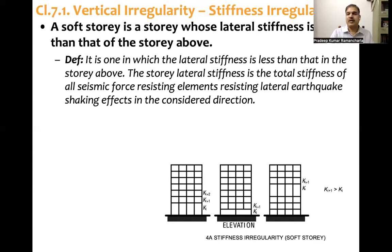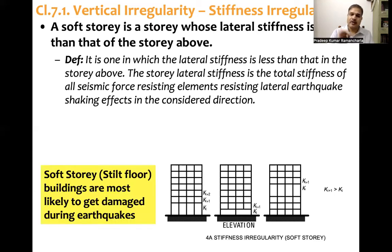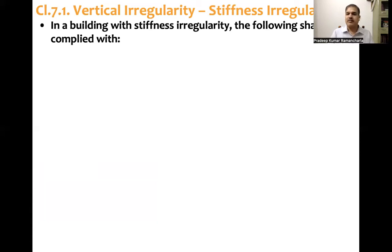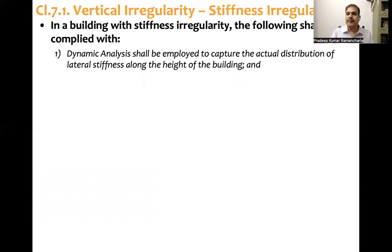How do you design a building which has a soft story? Soft story floors in buildings are most likely to get damaged during an earthquake. For a building with stiffness irregularity — which is one of the vertical irregularities — the code requires that dynamic analysis shall be employed to capture the actual distribution of lateral stiffness along the height of the building.